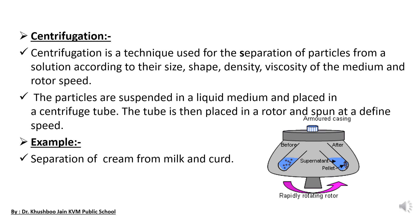The next process is known as the centrifugation method. Centrifugation is a technique used for the separation of particles from a solution according to their size, shape, density, viscosity of the medium, and rotor speed. In this process the particles are suspended in a liquid medium and placed in a centrifuge tube, which is then placed in a rotor and spun at a defined speed. After completing this process we get the solid particles separated out from the liquid.